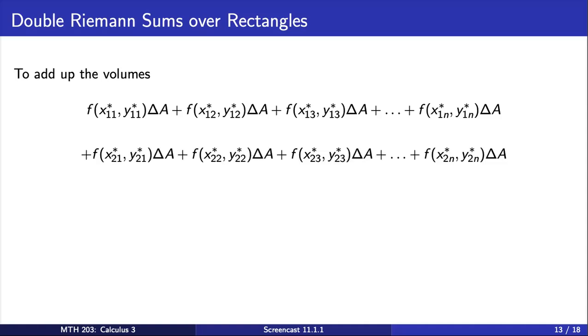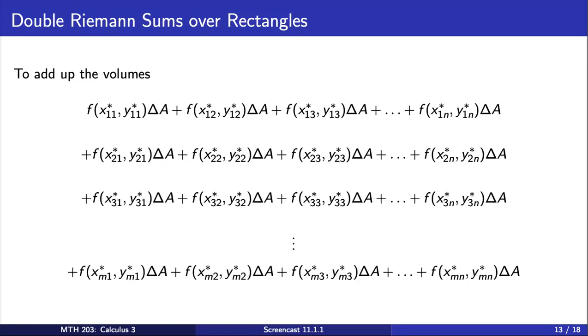Then we add up all the volumes from the second row of boxes, and the third row of boxes. And we keep going, and we stop once we've gotten to the last row.